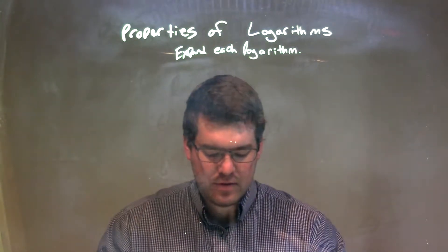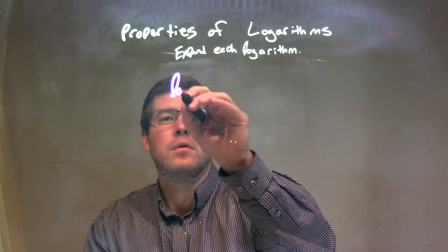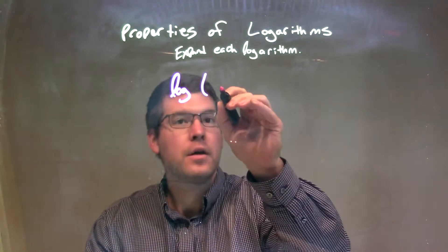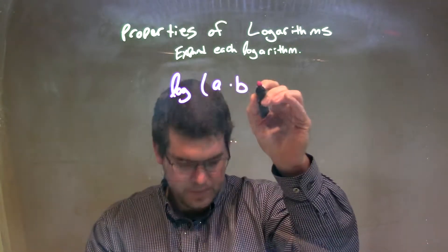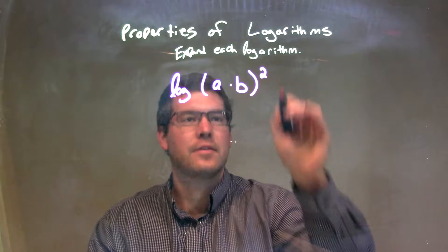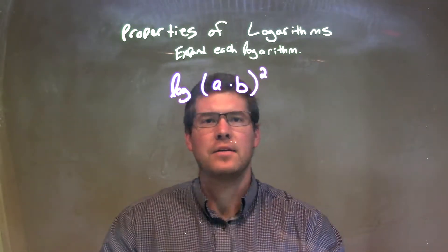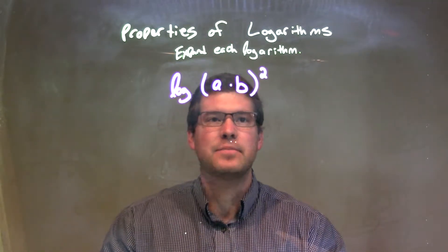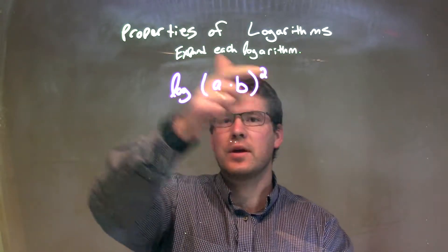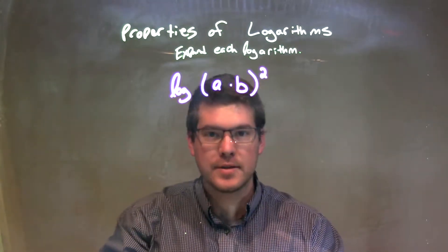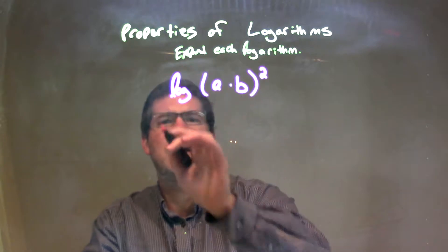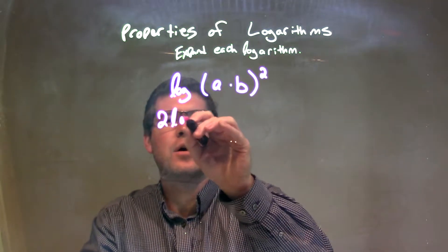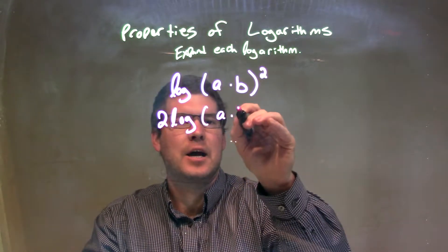If I was given this logarithm: log of a times b all to the second power. Well, when we expand this, the exponent can come down out front. So that 2 coming down out front, we have 2 log of a times b.